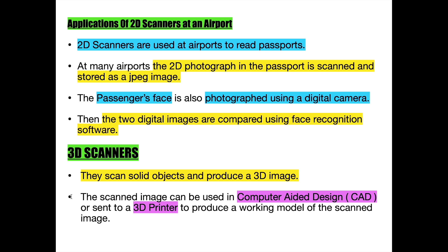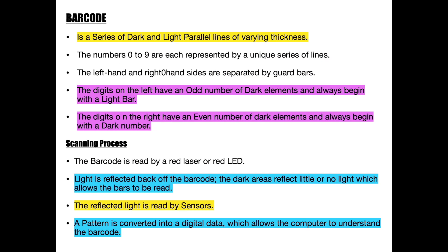Various scanners are used to scan small document-like patterns known as barcodes and QR codes. A barcode is a series of dark and light parallel lines of varying thickness. Each of these lines represents a number between 0 and 9 inclusive. The left-hand side lines and the right-hand side lines are separated by boundaries known as guard bars. The digits on the left have an odd number of dark lines and always begin with a light bar, while digits on the right have an even number of dark lines and always begin with a dark bar.